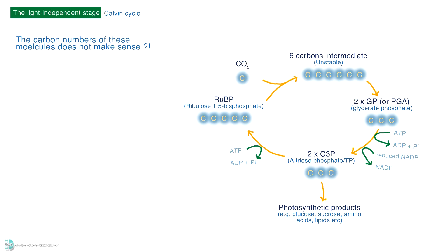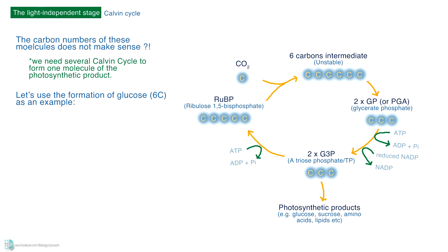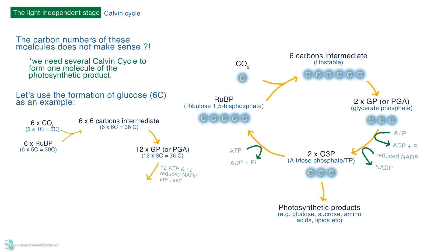The carbon numbers of these molecules may not quite add up at first. In fact, we need several Calvin cycles to form one molecule of photosynthetic product. Let's use glucose as an example. To produce one molecule of glucose with 6 carbons, we need 6 carbon dioxide and 6 RuBP. This gives us 6 unstable intermediates and then 12 GP. With the help of 12 ATP and 12 reduced NADP, we will have 12 G3P. Since each one has 3 carbons, we now have 36 carbons in total. 6 of these carbons will be used to make one molecule of glucose. We are left with 30 carbons, which are rearranged to form 6 RuBP, as each has 5 carbons.